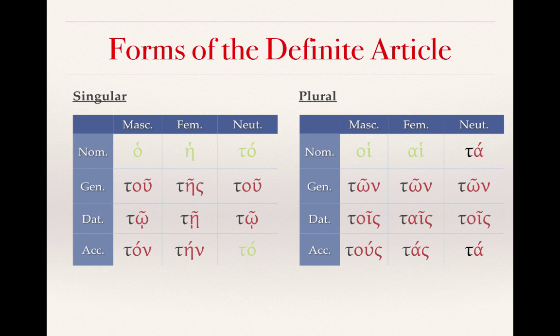Looking at the plural forms, the exceptions to the general rule are the masculine nominative and the feminine nominative. Other than that, the endings look exactly like they did with the noun endings. The plural definite article forms are: nominative: hoi, hai, ta; genitive: ton, ton, ton; dative: tois, tais, tois; accusative: toos, taas, ta.